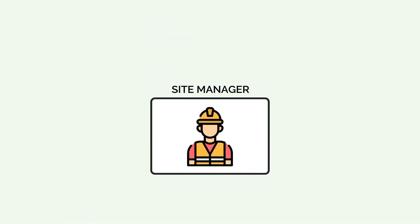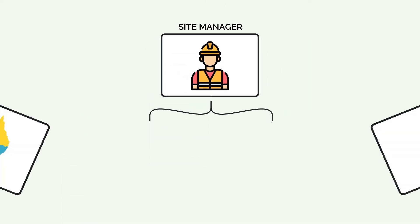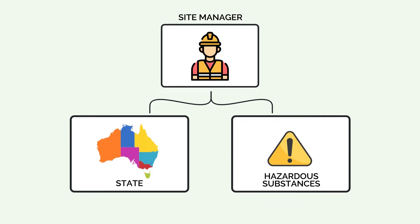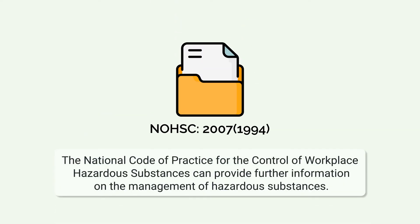The person with control should consult their State or Territory OHS authority with regard to specific requirements for the manufacture or supply and use of hazardous substances. The National Code of Practice for the Control of Workplace Hazardous Substances, NOHSC 2007-1994, can provide further information on the management of hazardous substances.